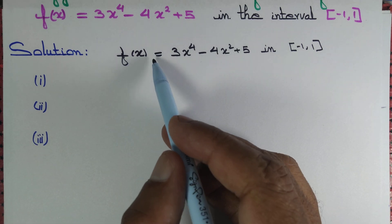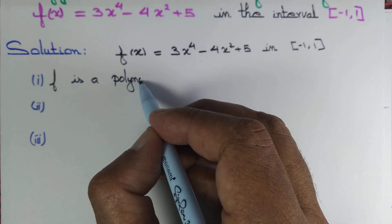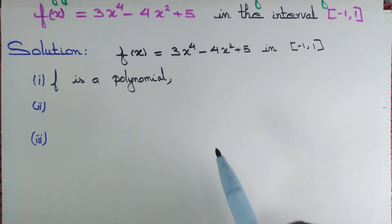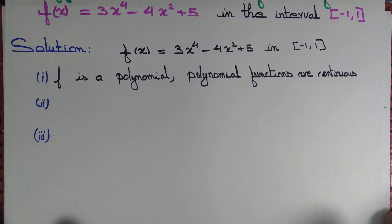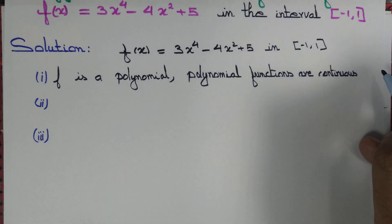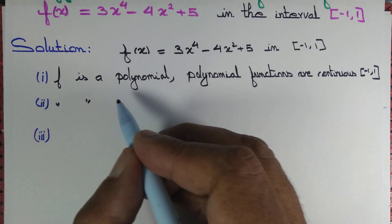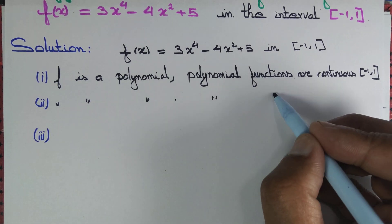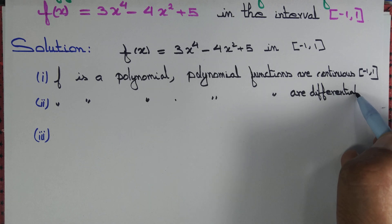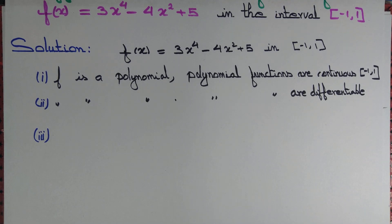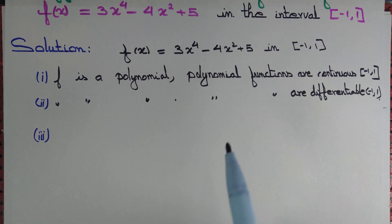The first criterion is that f is continuous. Observe that f is a polynomial, and polynomial functions are continuous throughout ℝ. We just need to show that it is continuous in the closed interval [-1, 1], which is satisfied since f is a polynomial.